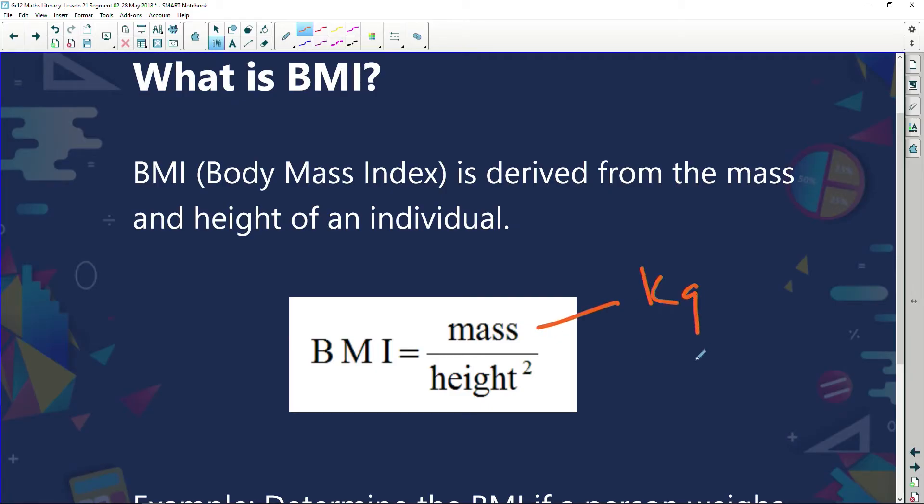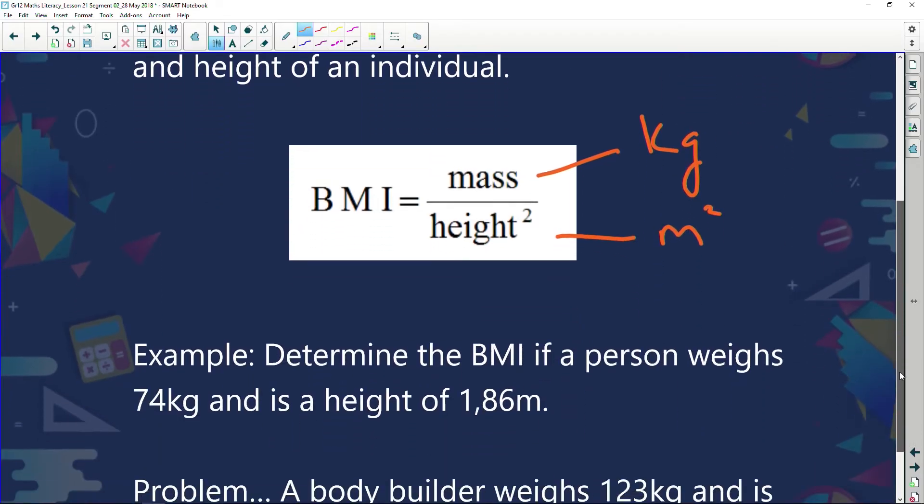How do we determine that? We determine that with a measurement known as your body mass index. We calculate that by getting your mass in kilograms and your height in meters, then we square the meters and divide the two.